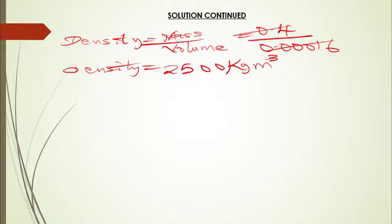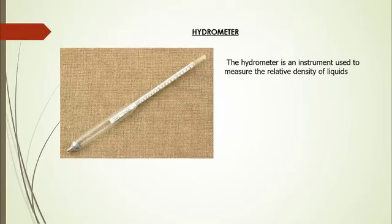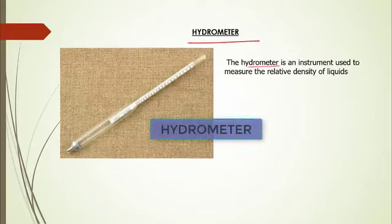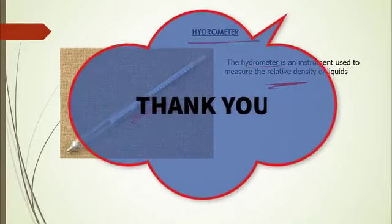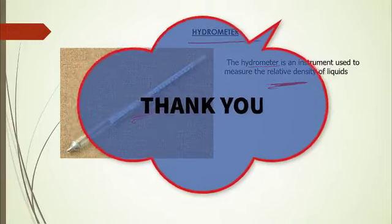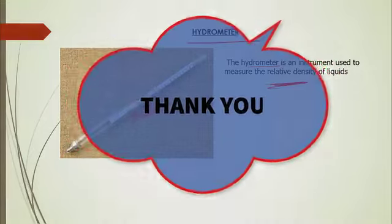There is an instrument used for measuring the relative density of liquids called a hydrometer, as shown in the slideshow. Thank you for joining us in this lesson. To refresh your memory of what we've just discussed, please take the test that will appear on your screen.